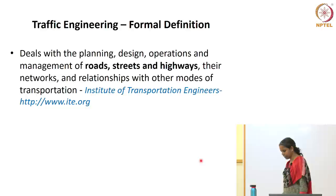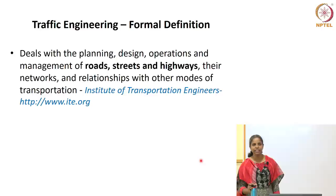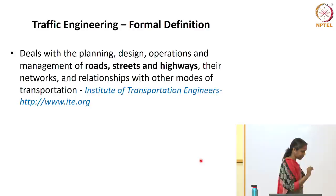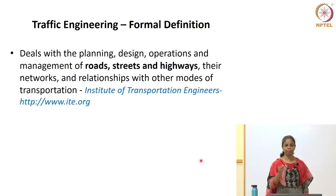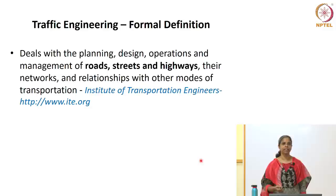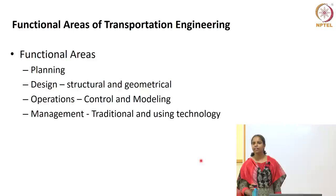Coming to the formal definition of traffic engineering, the simple version we saw was about moving people and goods from one place to another. The textbook definition restricts to roadways and says: planning, design, operation, and management. These are the stages you go through when doing a complete system development for transportation. Each of these terms — planning, design, operations, management — is actually a separate course. There are two undergrad-level transportation courses which cover all these briefly, and then separate courses for complete details.